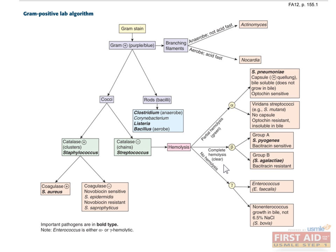First, let's say you gram-stained an unknown bacterial sample and found that the color of the bacteria was purple-blue. Does this mean that the bacterium is gram-negative or gram-positive? Correct, it's a gram-positive organism.